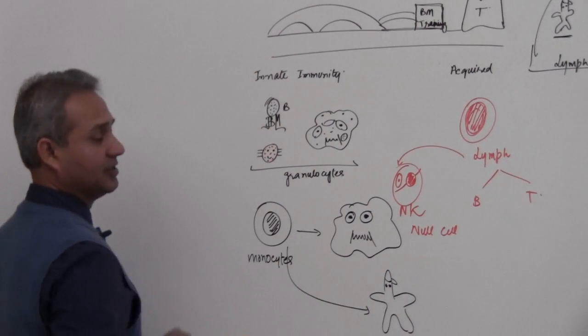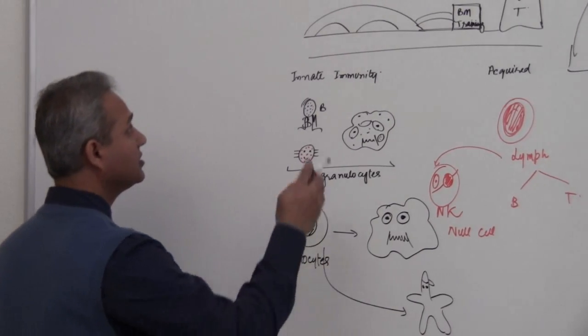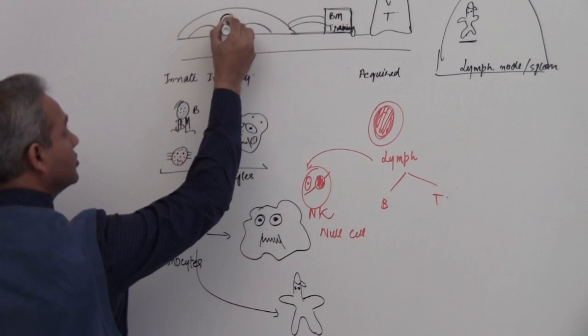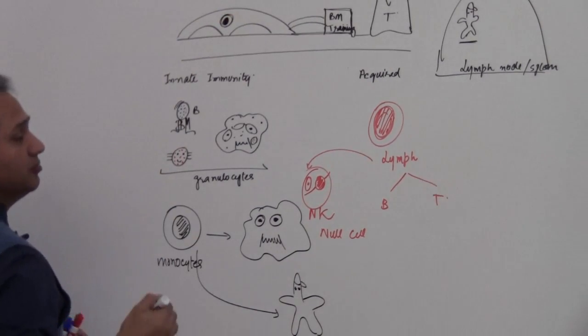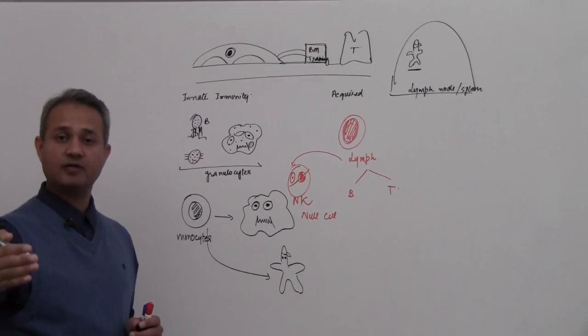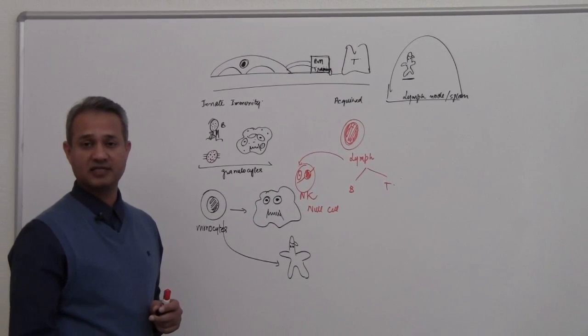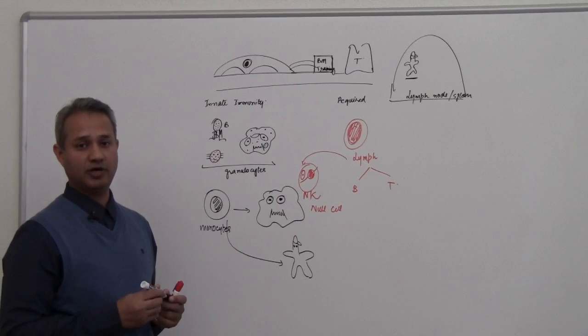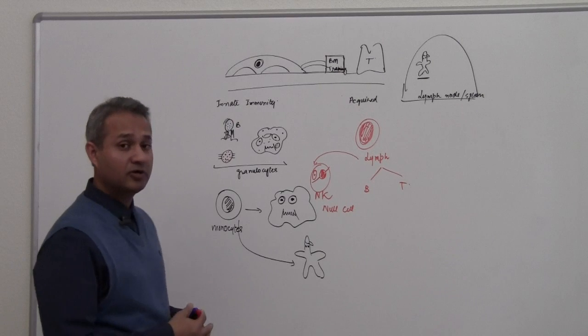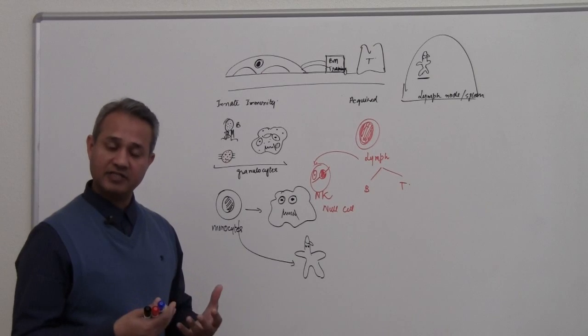So players here, I would add a couple of more players to this. I would add players which are sitting here in the bone marrow house. So I would say the bone marrow cells which are working to create more cells, the stem cells. We would treat them as a player in our discussion as well, because ultimately they also help our body produce more and more cells to defend ourselves.